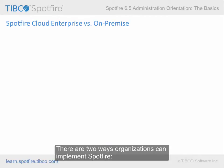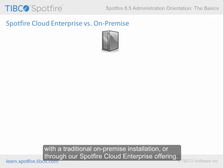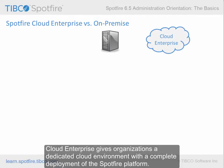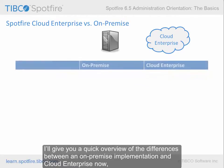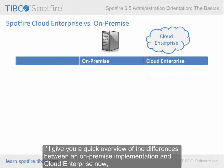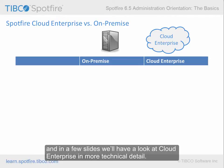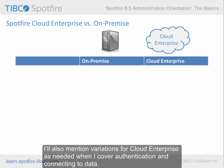There are two ways organizations can implement Spotfire: with a traditional on-premise installation, or through our Spotfire Cloud Enterprise offering. Cloud Enterprise gives organizations a dedicated cloud environment with a complete deployment of the Spotfire platform. I'll give you a quick overview of the differences between an on-premise implementation and Cloud Enterprise now, and in a few slides we'll have a look at Cloud Enterprise in more technical detail. I'll also mention variations for Cloud Enterprise as needed when I cover authentication and connecting to data.